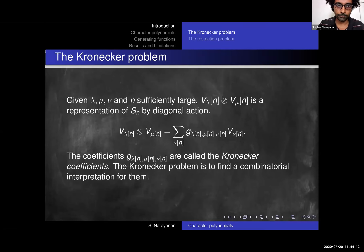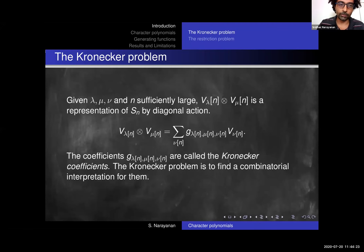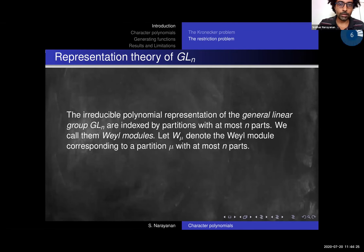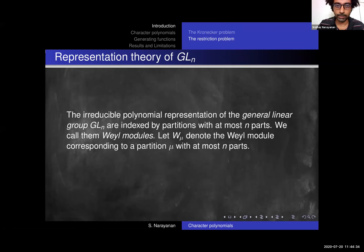The Kronecker problem is one of the problems that we are trying to develop generating functions for. What the Kronecker problem says is: if you take two representations of Sn and tensor them, that is a representation of Sn. What is a combinatorial interpretation for the multiplicities of each of the irreducible Sn representations? This problem is of course open.